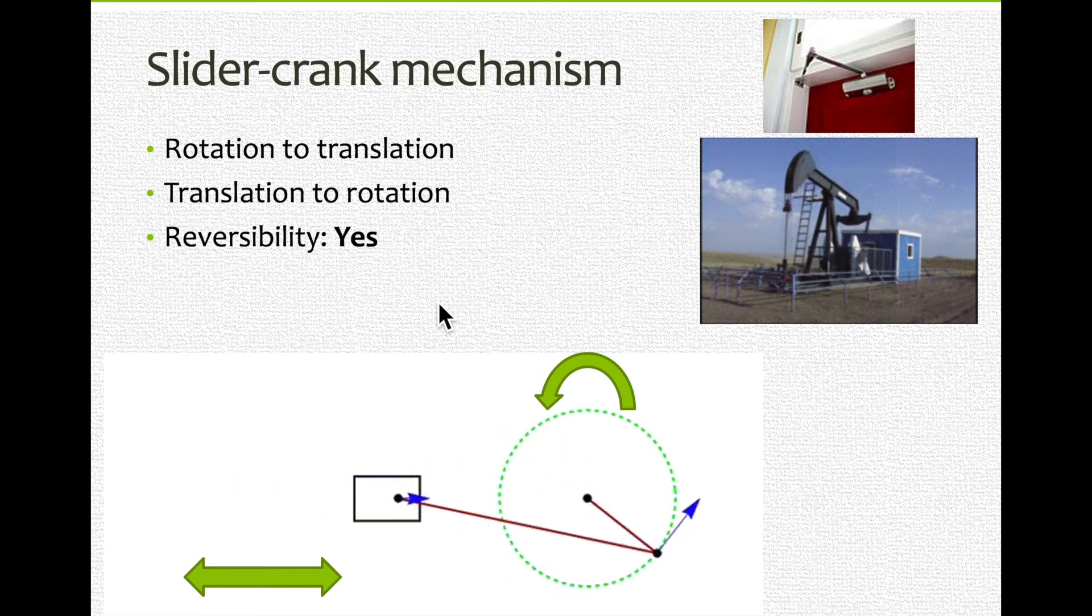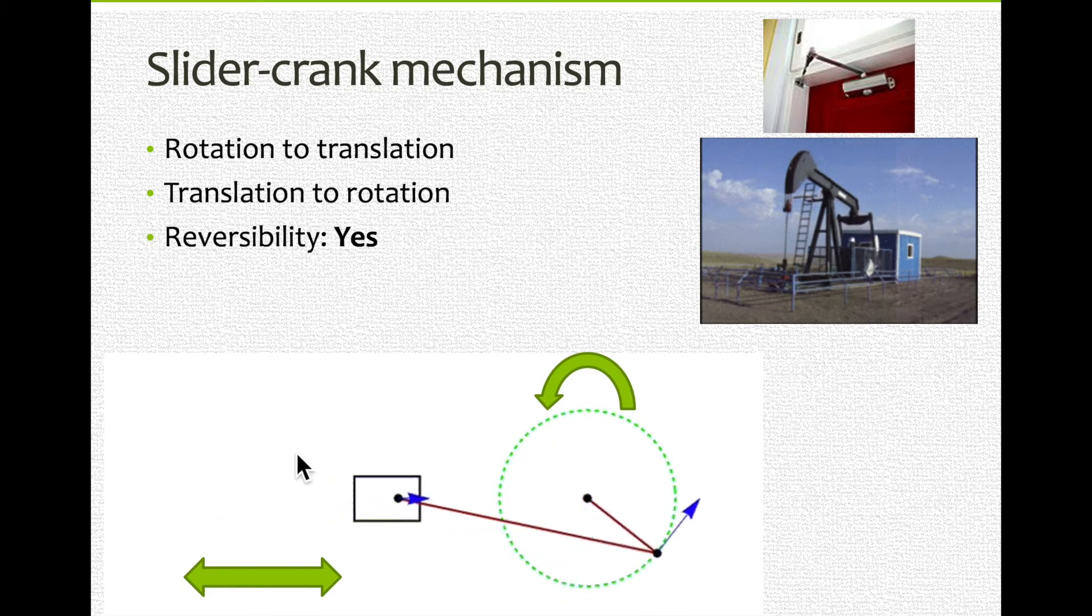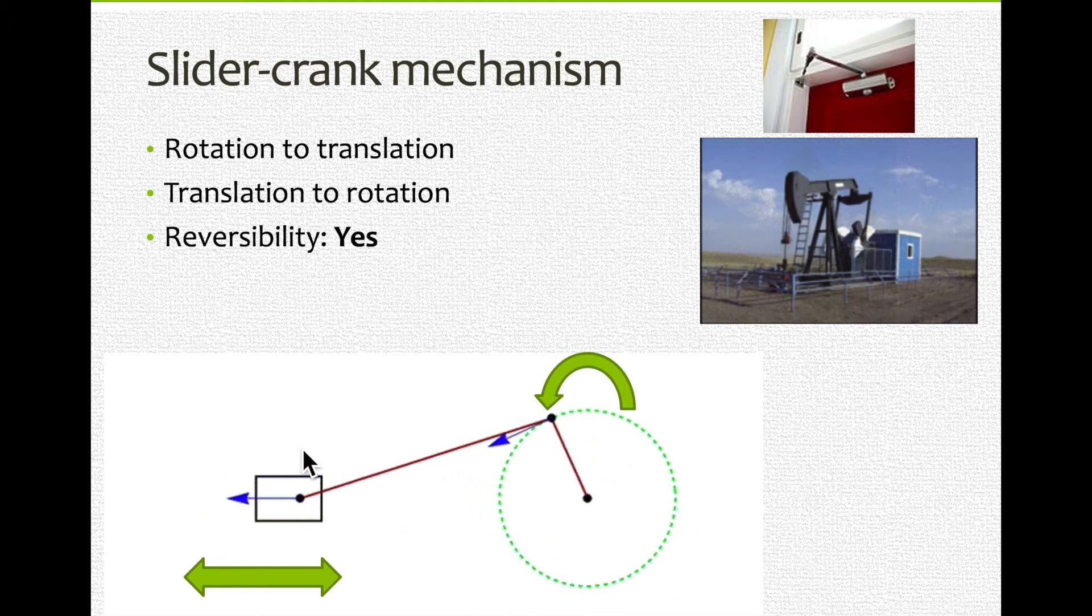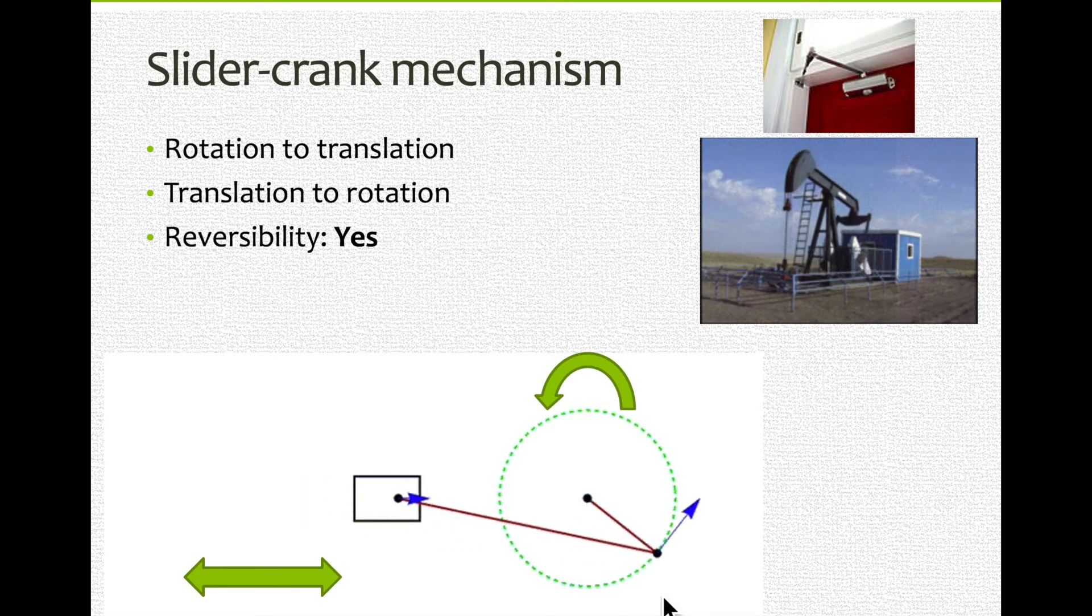We say rotation to translation, but we can have translation to rotation. So in this case this could be the driver if the translation comes first and it would make this rotate. This would be the driver in the second example. This would be the driven in the second example.